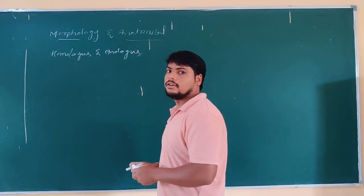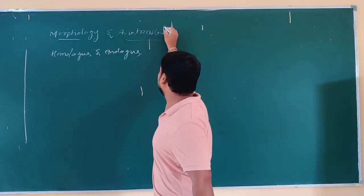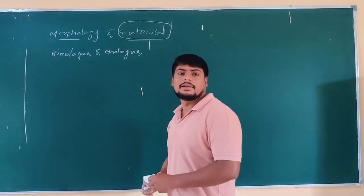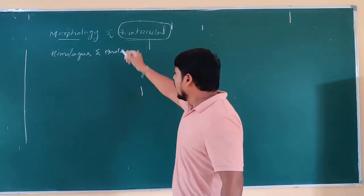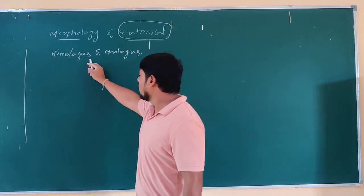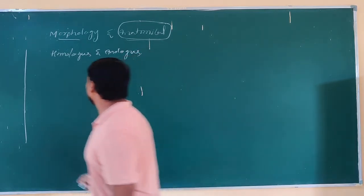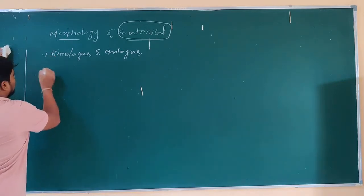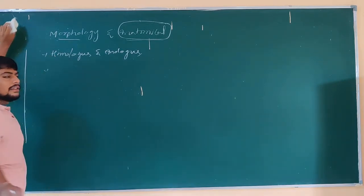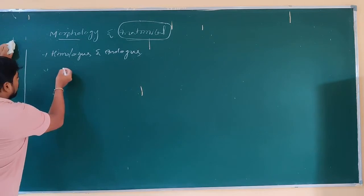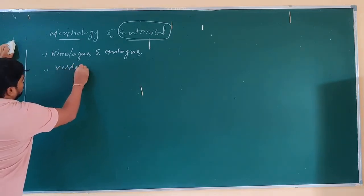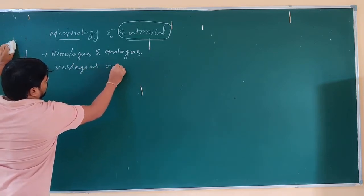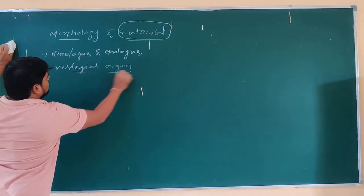Because of short duration, yesterday we covered about the natural evidences of the surface — that is, we reached the chambers of the heart. Under morphological evidences, we discussed homologous organs. Now remaining, another type of evidence we will discuss: that is vestigial organs.